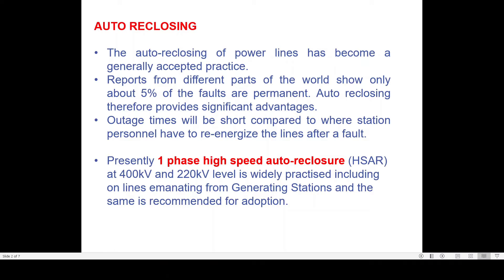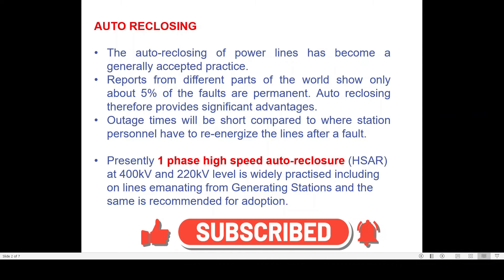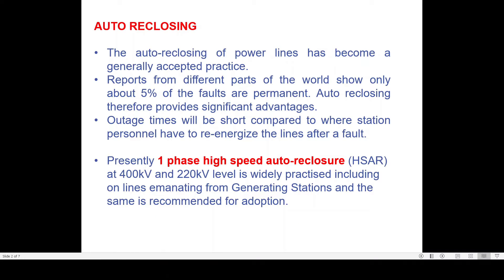If there is a permanent fault or a second fault, then all three poles of the circuit breaker will open. It doesn't matter whether the fault is in R, Y, or B phase — in the second case the relay will issue a three pole trip command, and after three minutes the breaker will close. This scheme is applied for transmission lines terminated inside mines or industries where stability is not of prime importance.